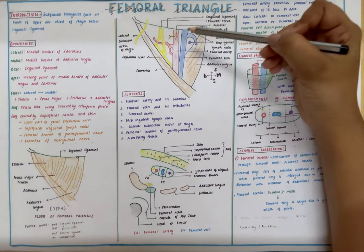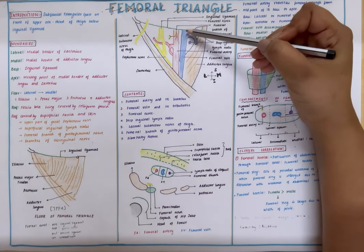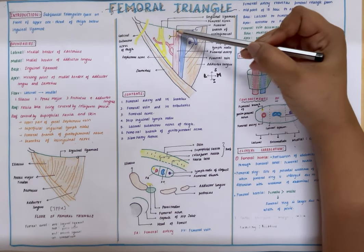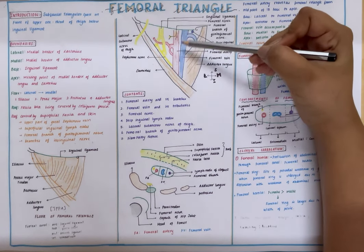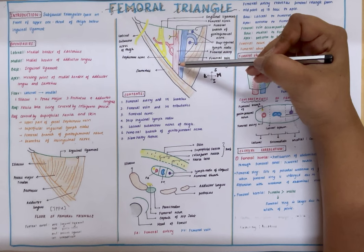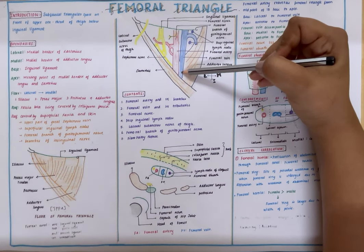Now if you look at the course of the femoral vessels in the femoral triangle, the femoral vein lies medial to the femoral artery at the base. As they come towards the apex, the femoral vein goes posterior and the femoral artery lies anterior to the femoral vein.